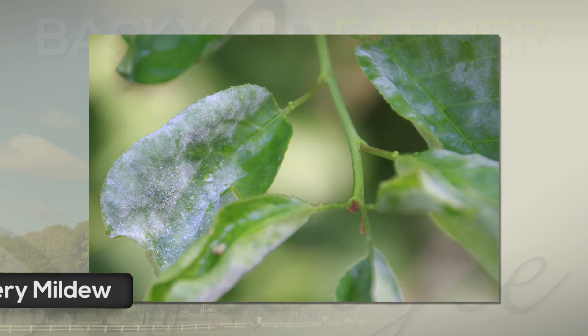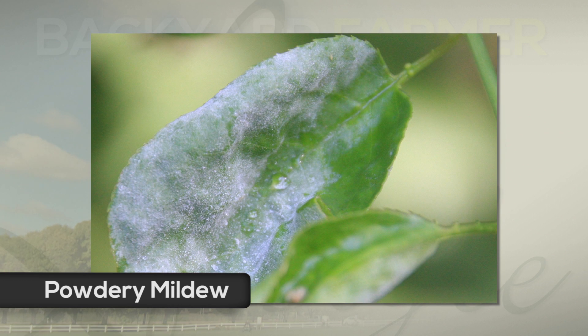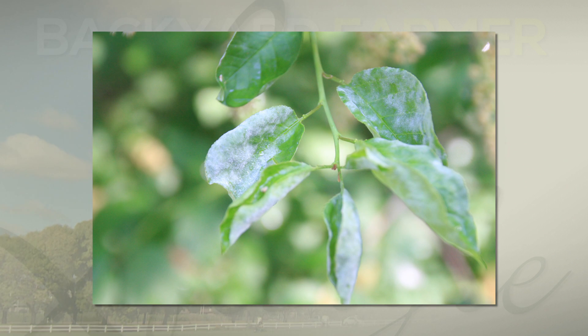The third disease I'd like to talk about is powdery mildew, and again this is a fungal disease. As the name implies, the symptoms are a powdery mildew formed on the leaf surface — on the upper leaf surface — and that powdery mildew is white in color. This disease is again favored by high humidity and can start anywhere on the plant, the upper leaves or the lower leaves. As long as there's high humidity, the fungus can form.